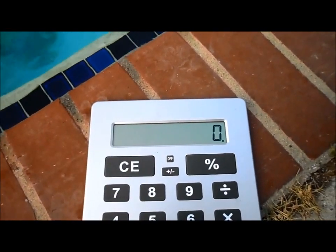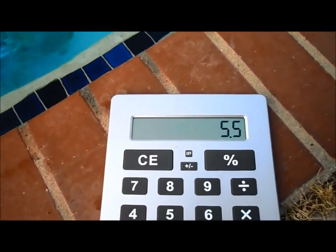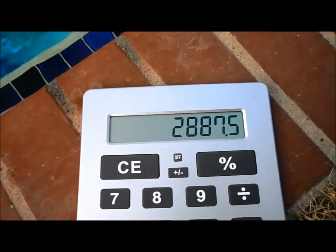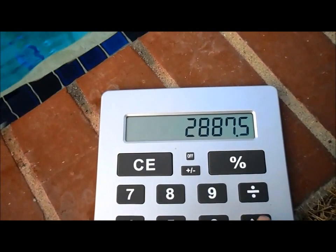Take the pool square footage, which is 525 times 5.5 feet deep, and that gives us 2,887 square feet. And then we times it by the amount of square foot a gallon of water holds.